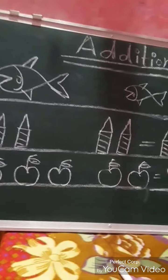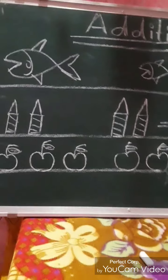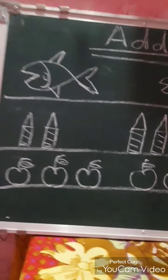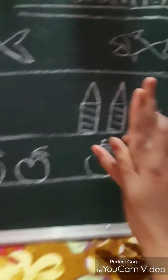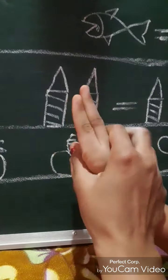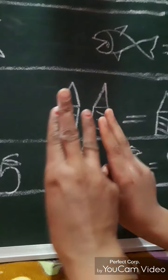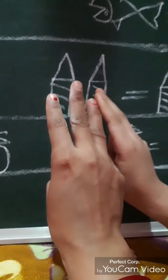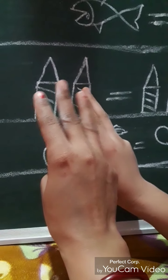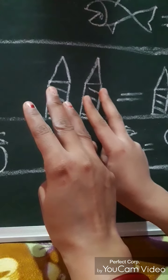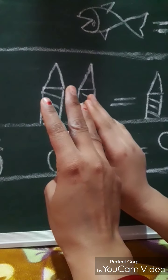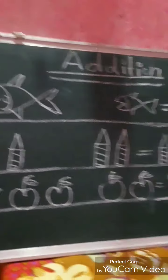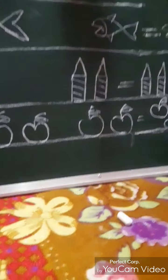Suppose you are two brothers at home, and your mother gives two apples to you and three apples to your brother. You keep your two apples at one place and your brother also keeps his three apples at that same place. After keeping, you start to count all the apples. By counting, you come to know that all together the apples are five in number.